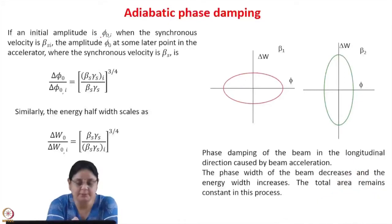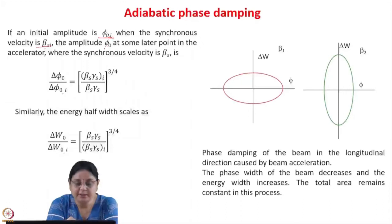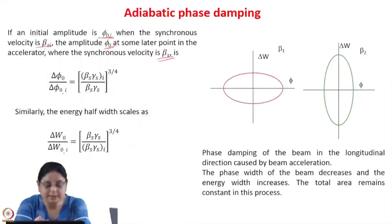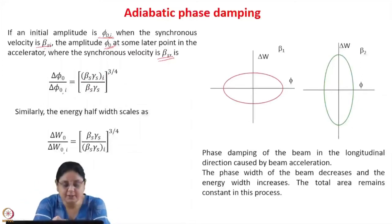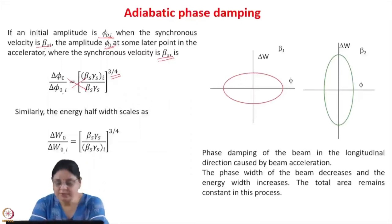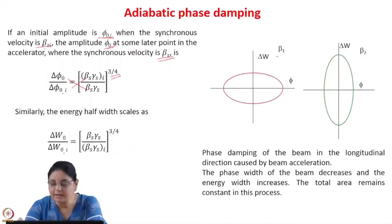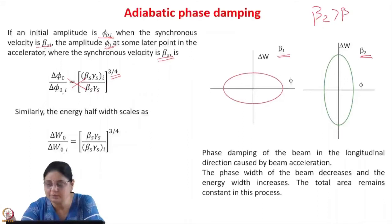The phase amplitude decreases as acceleration happens and the energy increases, while the energy amplitude increases as the beam is accelerated. This increase of the energy amplitude of phase oscillations during acceleration in a linac is known as phase damping because the phase is decreasing. The area remains constant because it is an adiabatic invariant. We can write delta_phi_0 / delta_phi_0i = (beta_si * gamma_si / beta_s * gamma_s)^(3/4), showing an inverse relationship — the phase is getting damped after acceleration.